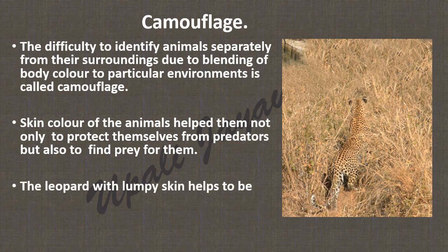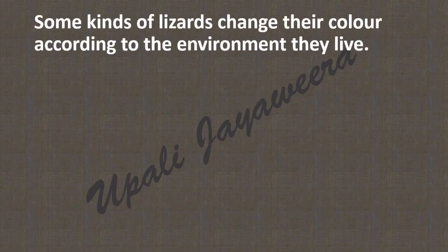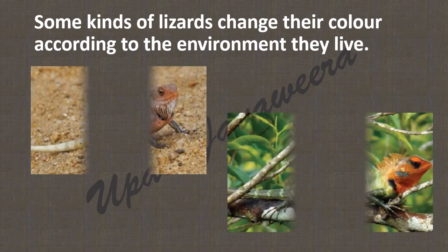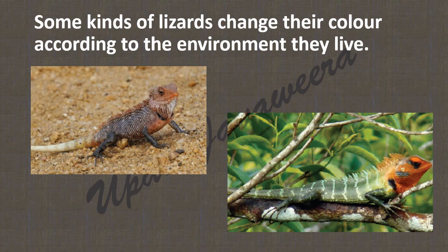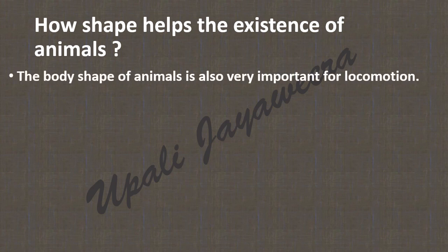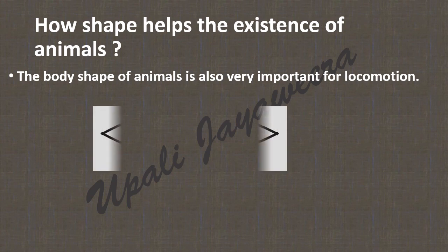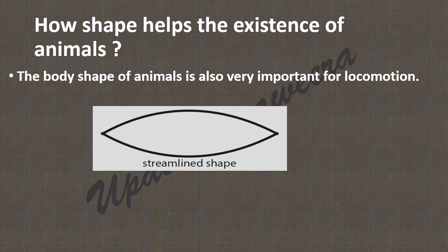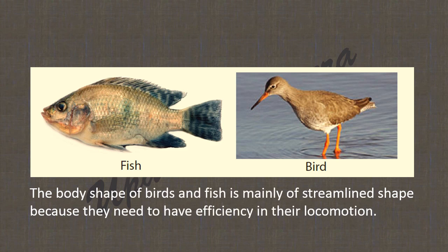The leopard with its patchy skin helps it to be invisible in order to catch prey, as you can see in the diagram. The body shape of animals is also very important for locomotion. This shape is called the streamline shape. The body shape of birds and fish is mainly streamline because they need efficiency in their locomotion.